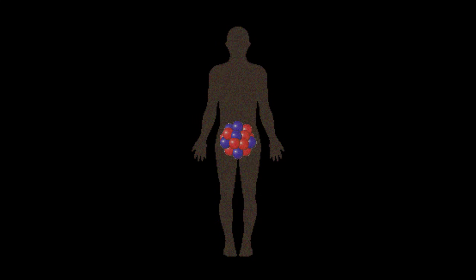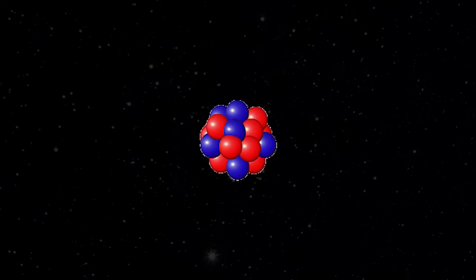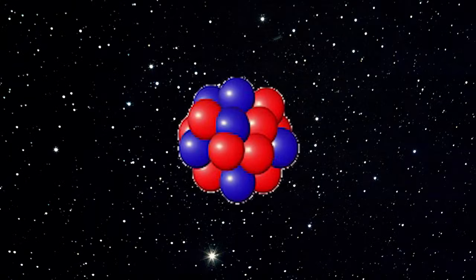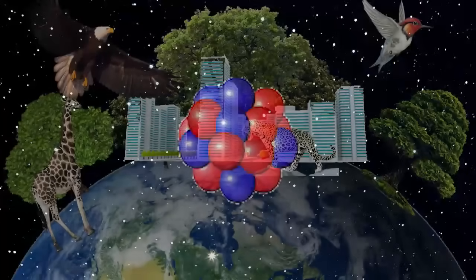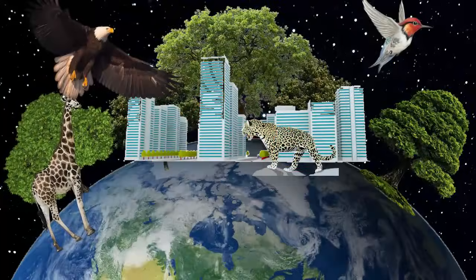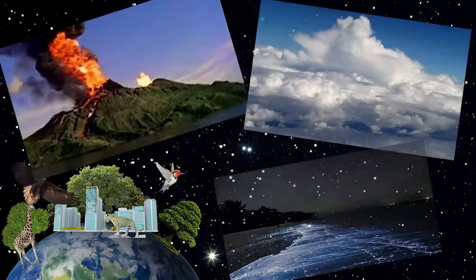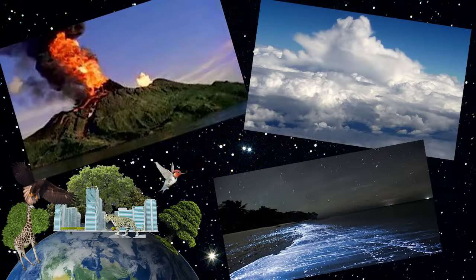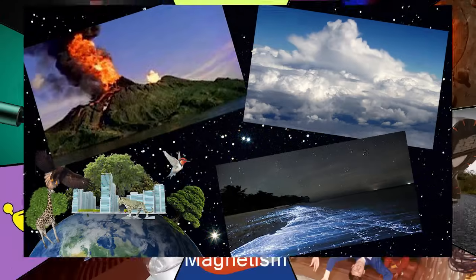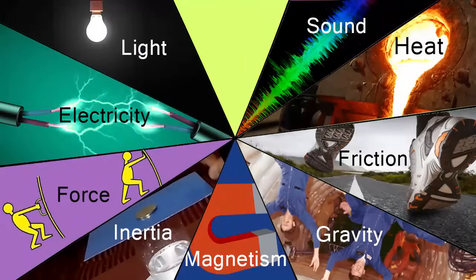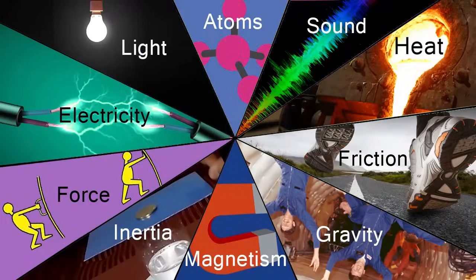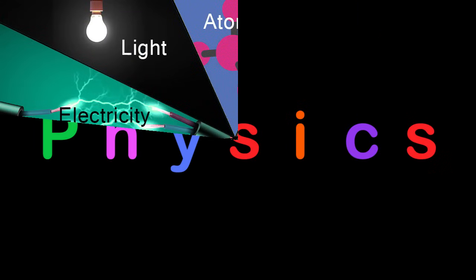Even things that we can't see, like tiny dust particles, are made up of atoms. The theory of atoms and molecules is involved with the origin of the universe, life on Earth, and everything around us — hence physics just cannot do without it. From all of these events, let us now define physics.